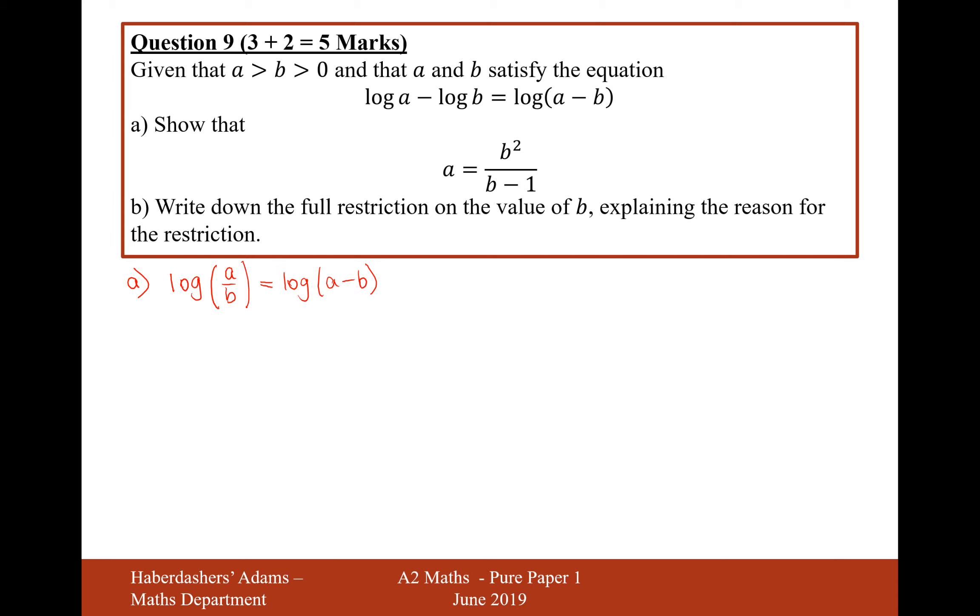Now we cancel out the log, so it's going to be a over b equals a minus b. In fact, I don't know why I put brackets around that, it's just a over b equals a minus b.